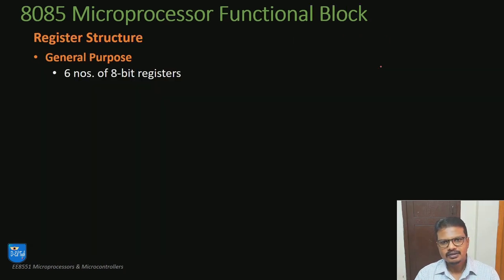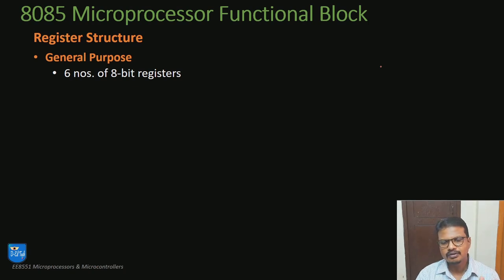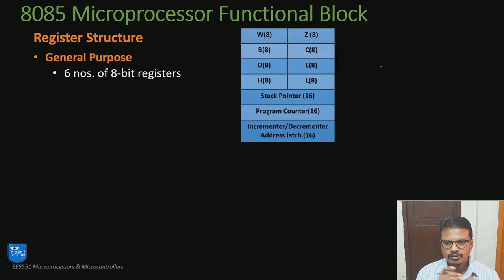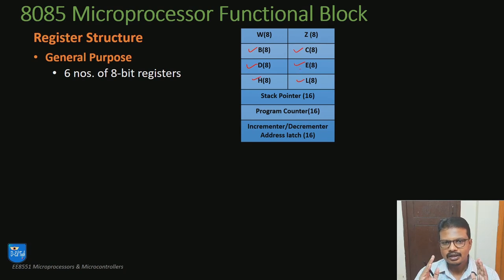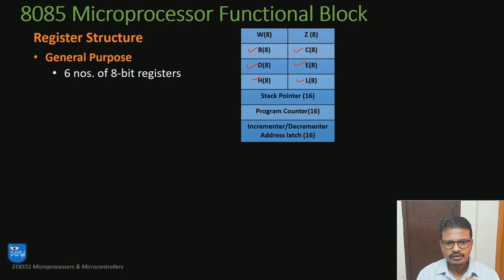The register structure of the 8085 microprocessor is divided into two portions. First is the general purpose registers — there are about 6 eight-bit general purpose registers: B, C, D, E, H, and L. These are 6 eight-bit general purpose registers which can be used for any arithmetic or logical operation. On top of this, we have registers by name W and Z, which are the internal general purpose registers.